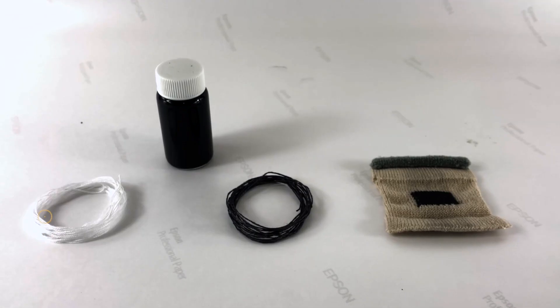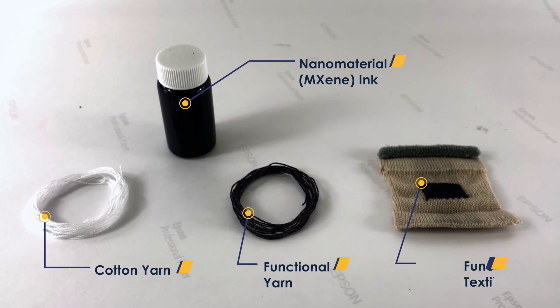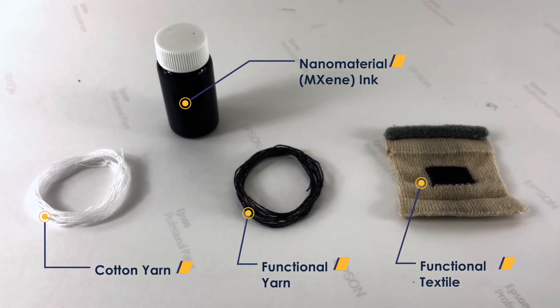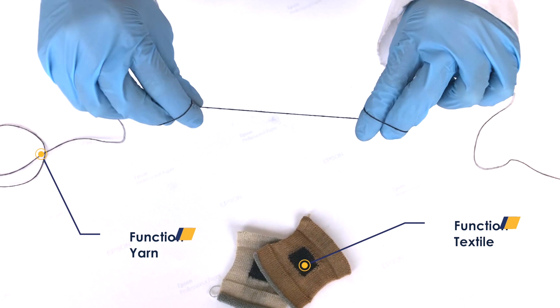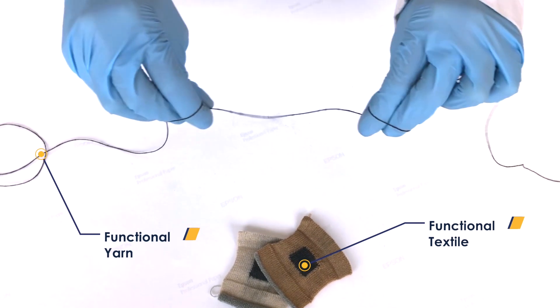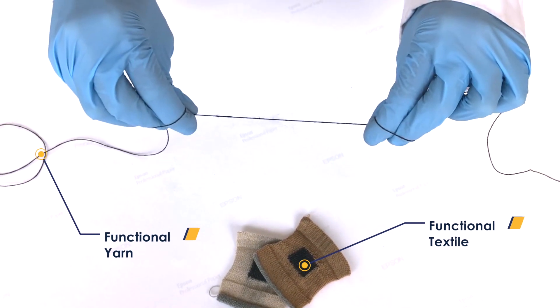By tailoring the size and chemistry of two-dimensional nanoparticles, we achieve a perfect match between the cotton fibers and nanoparticles which creates a strong bond that can last for the textile's lifetime use.